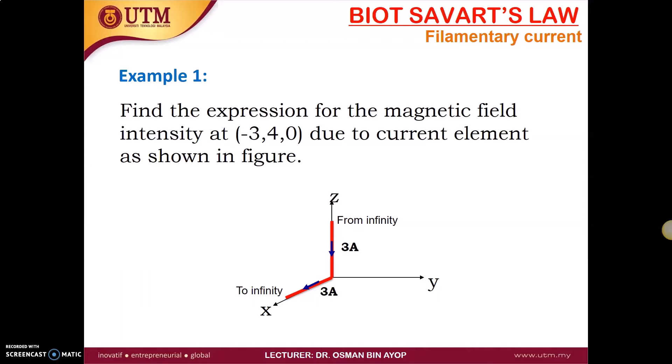Where L is a unit vector along the line current and R is a unit vector along the perpendicular line from the line current to the field point. Okay, we see the example 1. Find the expressions for the magnetic field intensity at (-3,4,0) due to current element as shown in this figure.